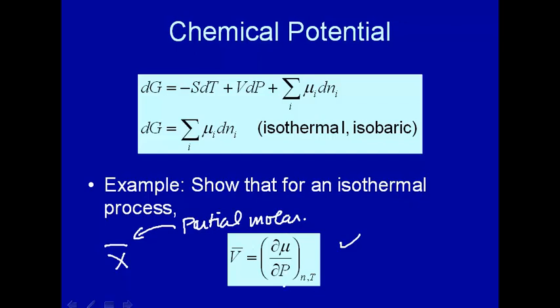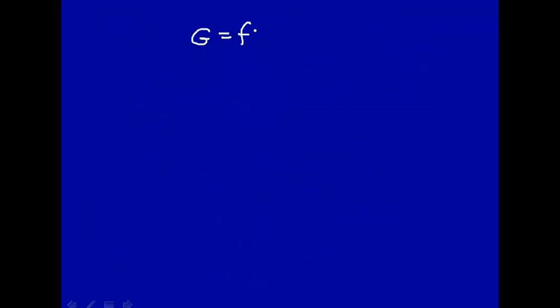That's interesting: if you measure the partial molar volume, seeing how volume changes with number of moles, then you have how chemical potential changes with pressure. Let's show that. Let's say g, the Gibbs free energy, is now a function of both number of moles in addition to pressure and temperature.